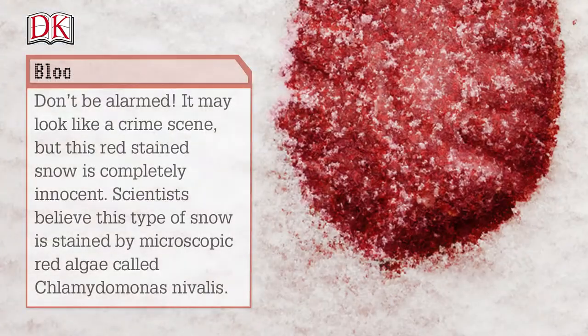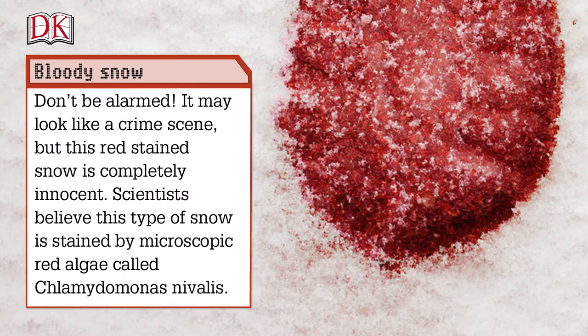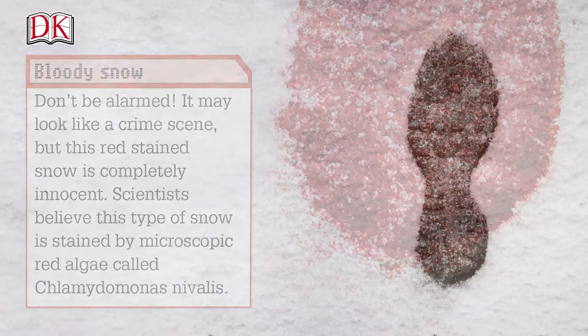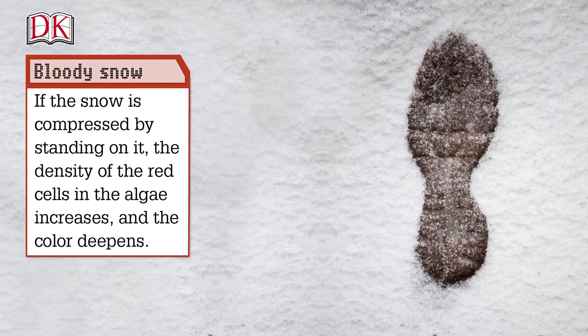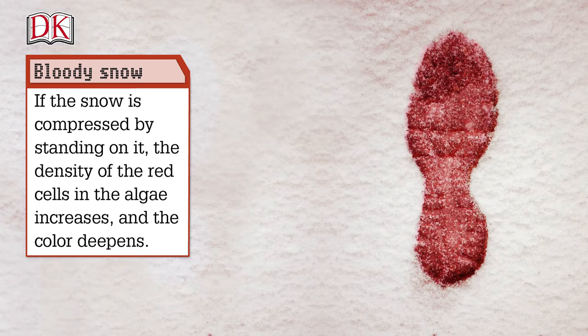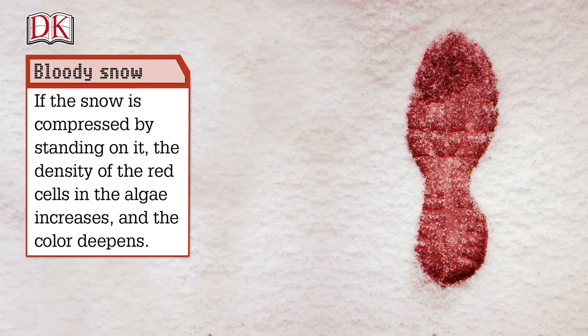Bloody snow. Don't be alarmed. It may look like a crime scene, but this red stained snow is completely innocent. Scientists believe this type of snow is stained by microscopic red algae called Chlamydomonas nivalis. If the snow is compressed by standing on it, the density of the red cells in the algae increases, and the color deepens.